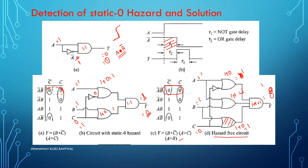Summary of detection and solution: plot the K-map. If there are adjacent 1s which are not grouped, your circuit is surely going to exhibit static 1 hazard. With the POS method, if there are adjacent 0s which are not grouped together, your circuit will surely exhibit static 0 hazard. To avoid that, group them together, lengthen the expression, write the circuit as per the expression, and your circuit will not be exhibiting any hazards.